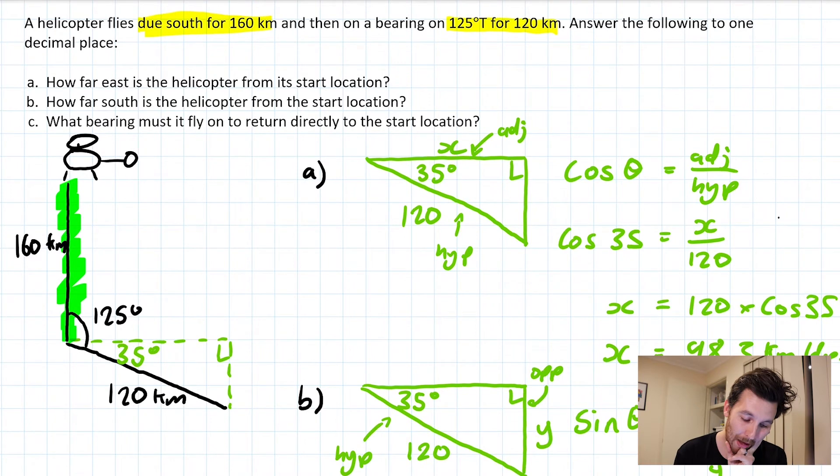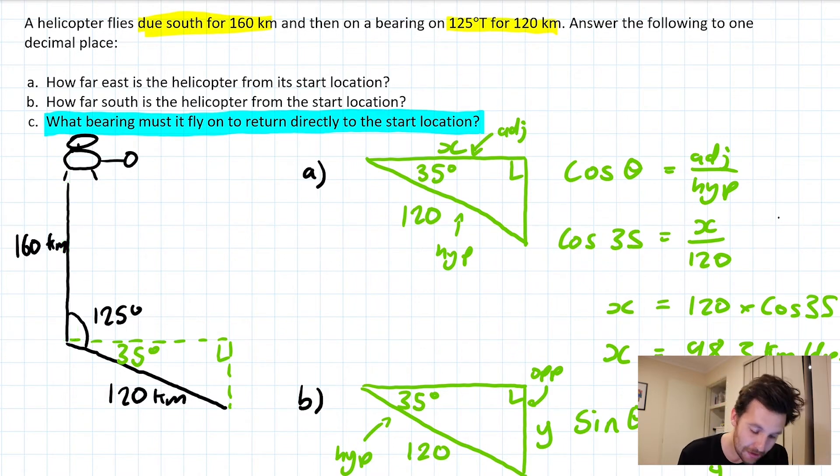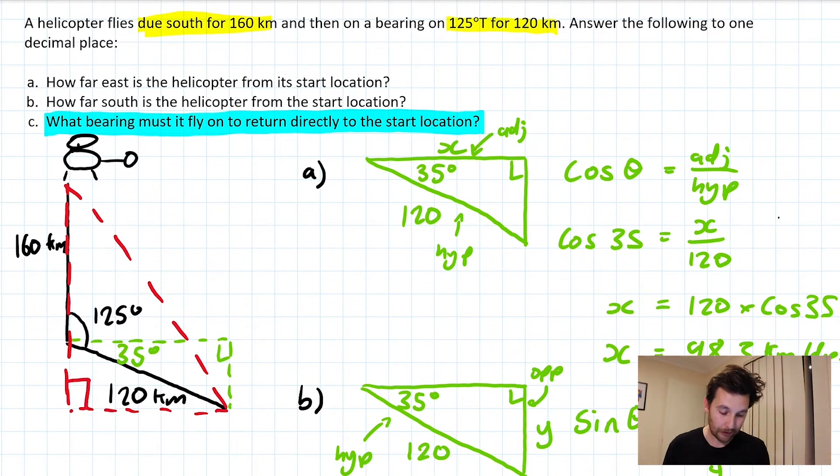Okay, and now for the grand finale, as it were. What bearing must the helicopter fly on to return to the start location? Okay, what I'm going to do now is do a little bit of scribbling in the triangle that we started off with. I'm going to make a new right angle triangle. I'm going to start from where the helicopter is now, I'm going to go across to the vertical underneath the start position, and I'm going to finish off my right angle triangle. It's getting a little messy, but it's not too bad.